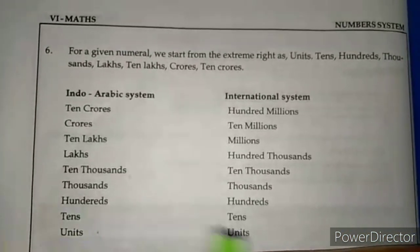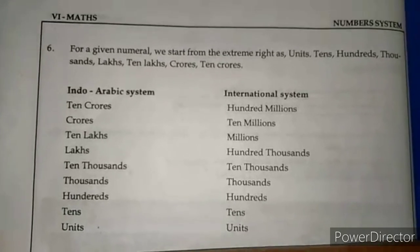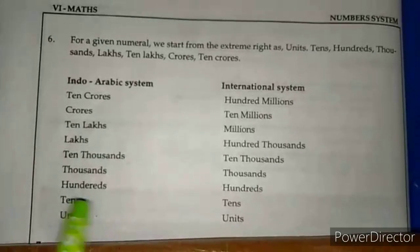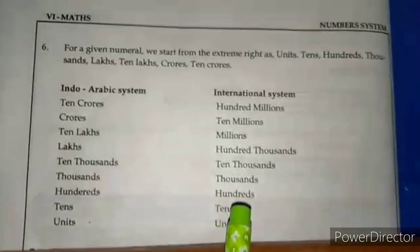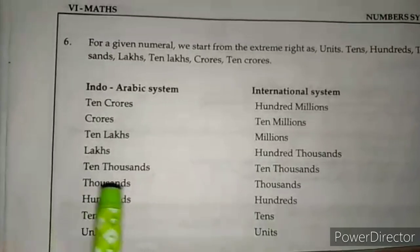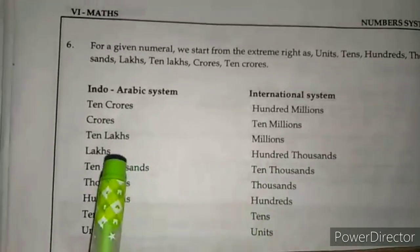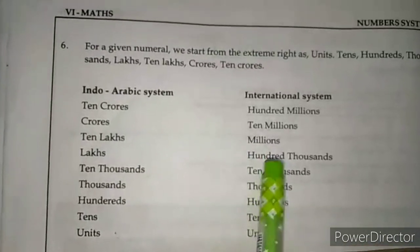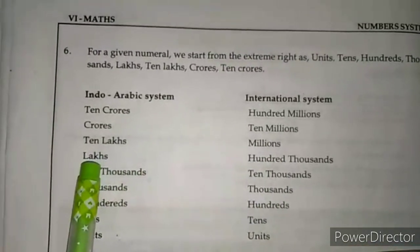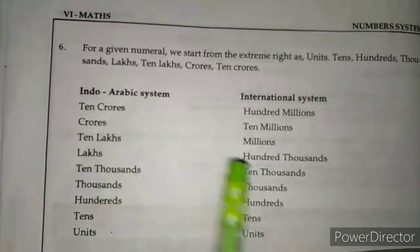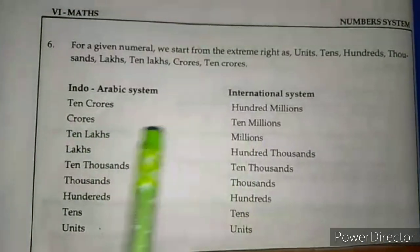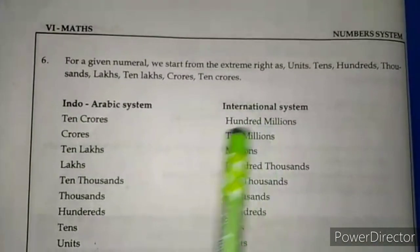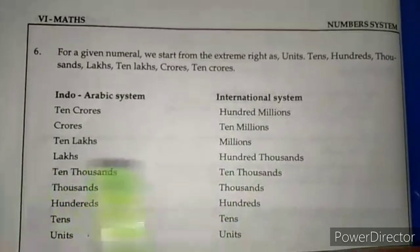These two systems are mostly the same but there are some differences. Units, tens, hundreds, thousands, and ten thousands are the same in both. The difference is: where Indian system has lakhs, the International system has hundred thousands. Ten lakhs equals one million. Crores equals ten millions. Ten crores equals hundred millions. This is the only difference between these two systems.